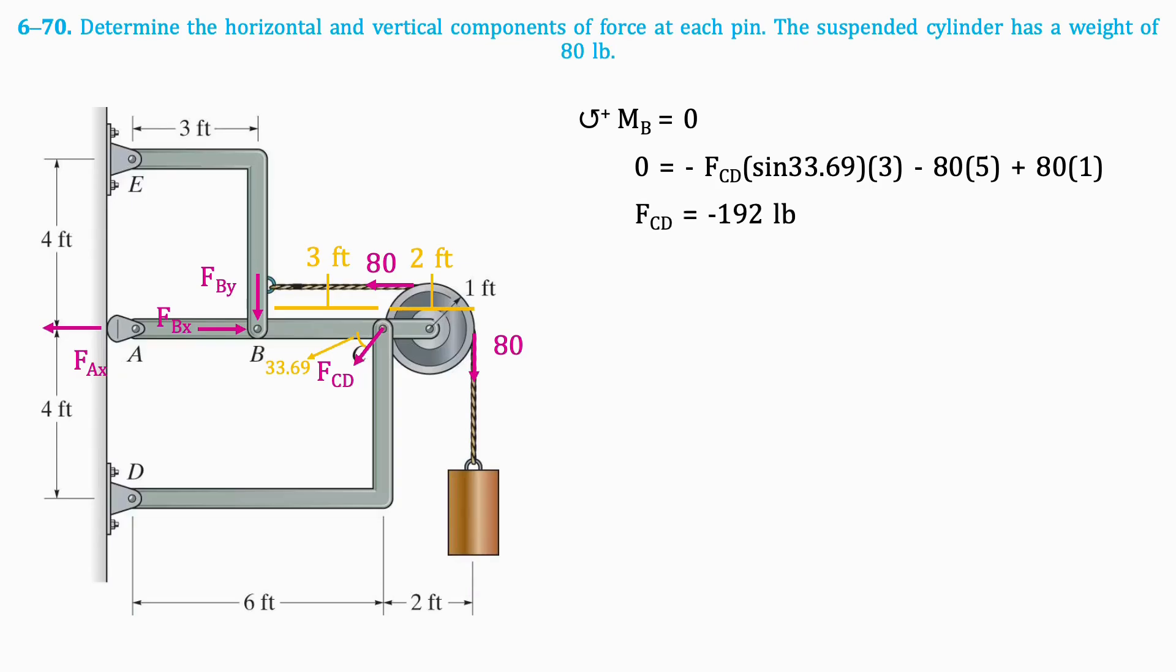So, the magnitude is 192 pounds. The negative sign means that the force actually points in the opposite direction to the one that we assumed, so we have to flip it in our diagram.